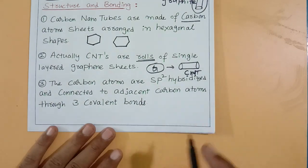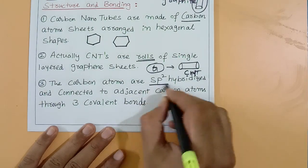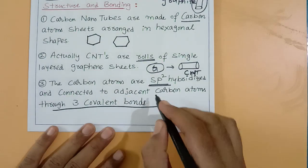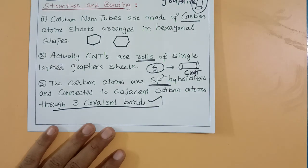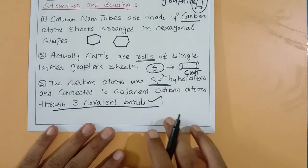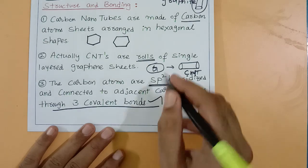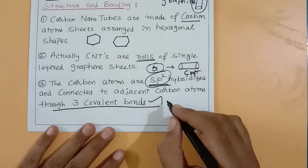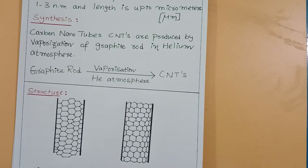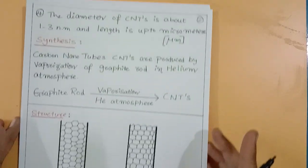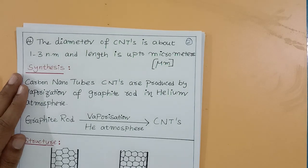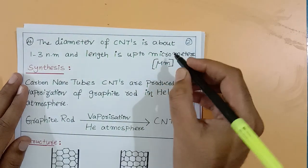In carbon nanotubes, the carbon atoms are sp2 hybridized and connected to adjacent carbon atoms through three covalent bonds — just like in graphite. The diameter of carbon nanotubes is about 1 to 3 nanometers and the length is up to some micrometers.